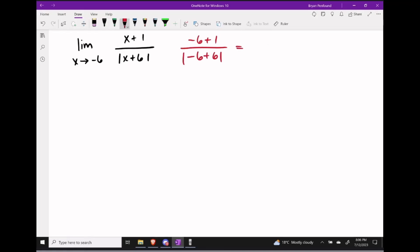Now what happens if we try to do a direct substitution? Let's assume that x was equal to negative 6 and substitute that into our function. This would give us negative 6 plus 1 in the numerator, which is negative 5, and the absolute value of negative 6 plus 6 in the denominator, which is actually 0.